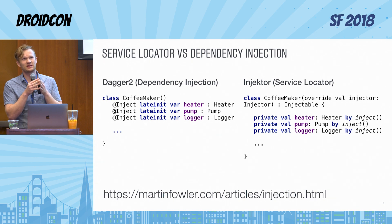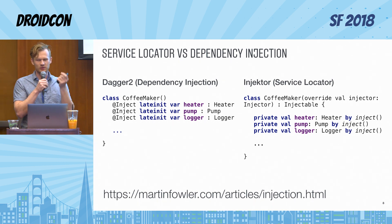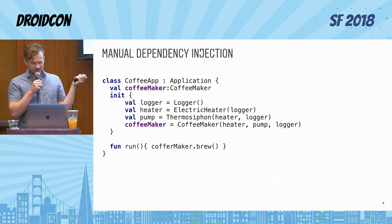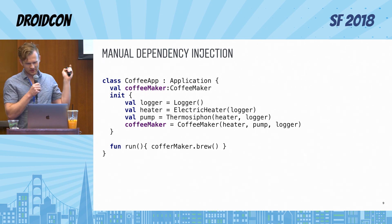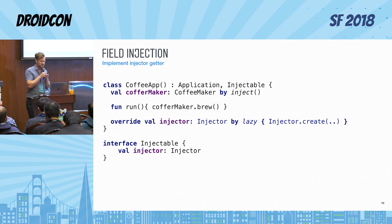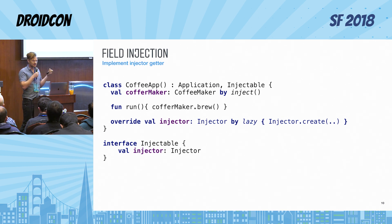The primary thing you need to understand is that they both are trying to solve similar problems, but there is this small detail that is important to note when we talk about terminology. So this is again our coffee maker with manual injection. When we use the Injector library we no longer need to know the details of how coffee maker is created — we just ask the injector framework to inject the instance of coffee maker to our field.